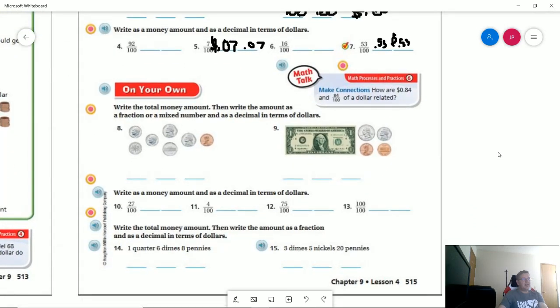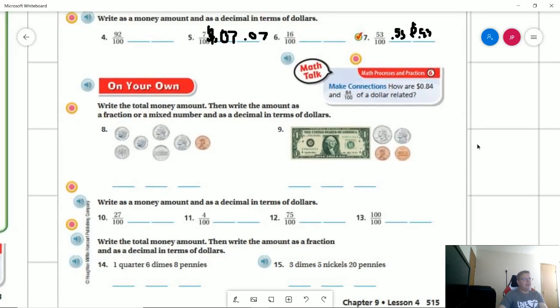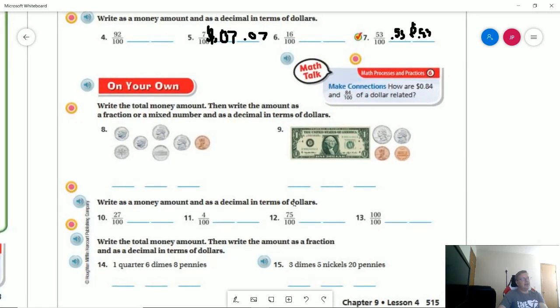So number nine, we are actually going to have an amount that is larger than $1. So if we have that, we are going to have a number in front of the decimal point.